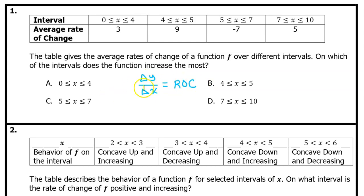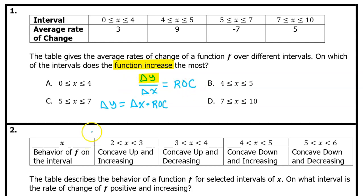I'm sure you won't mind if I flip that equation around the other way. The increase of the function is the change in y. So let's rewrite this equation so that the change in y is by itself. We can do that by multiplying both sides of the equation by the delta x in the bottom. We end up with delta y equals delta x times the average rate of change. In other words, the increase of the function for a particular interval is the width of the interval times the rate of change.